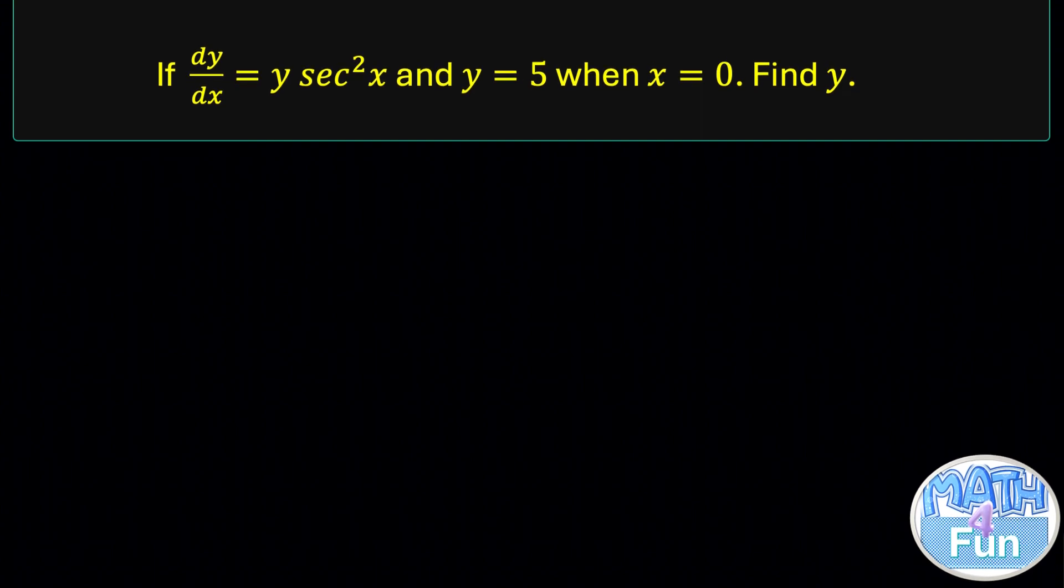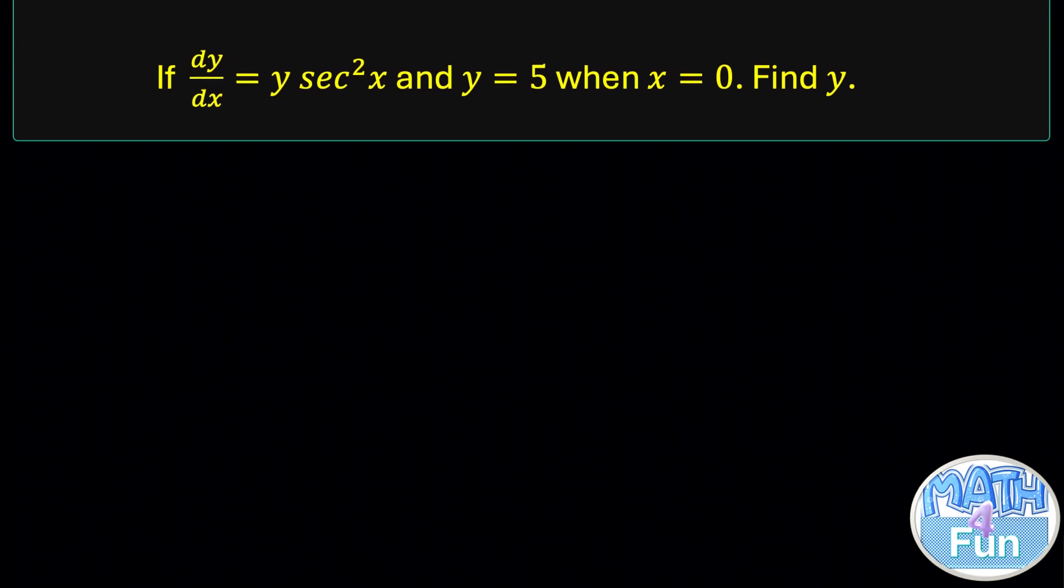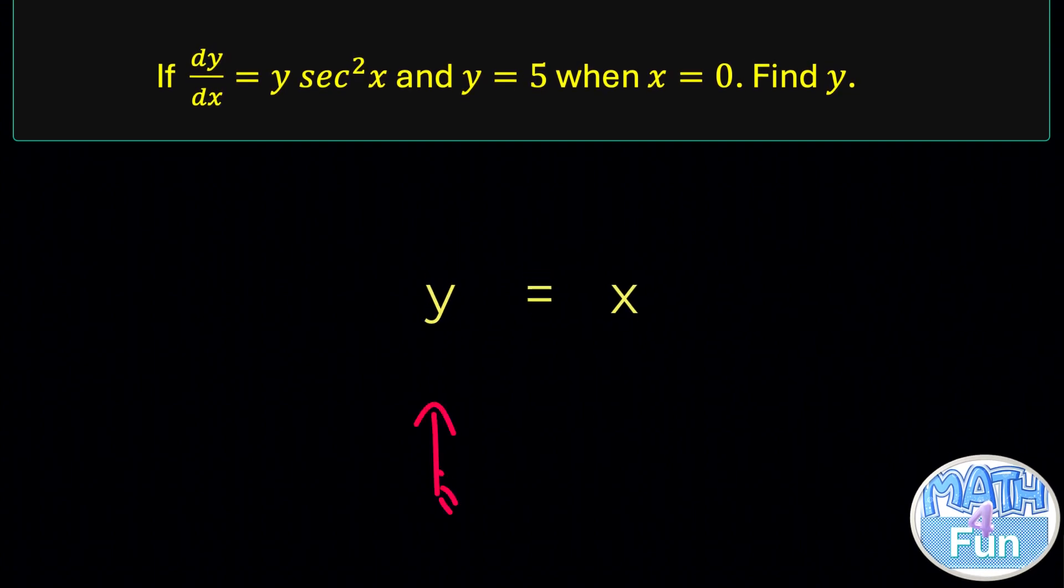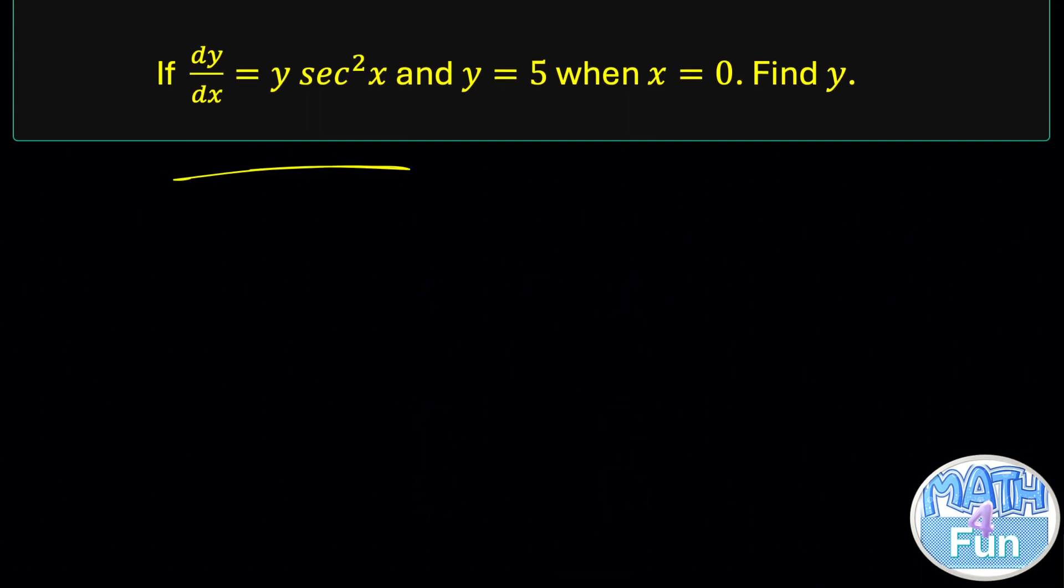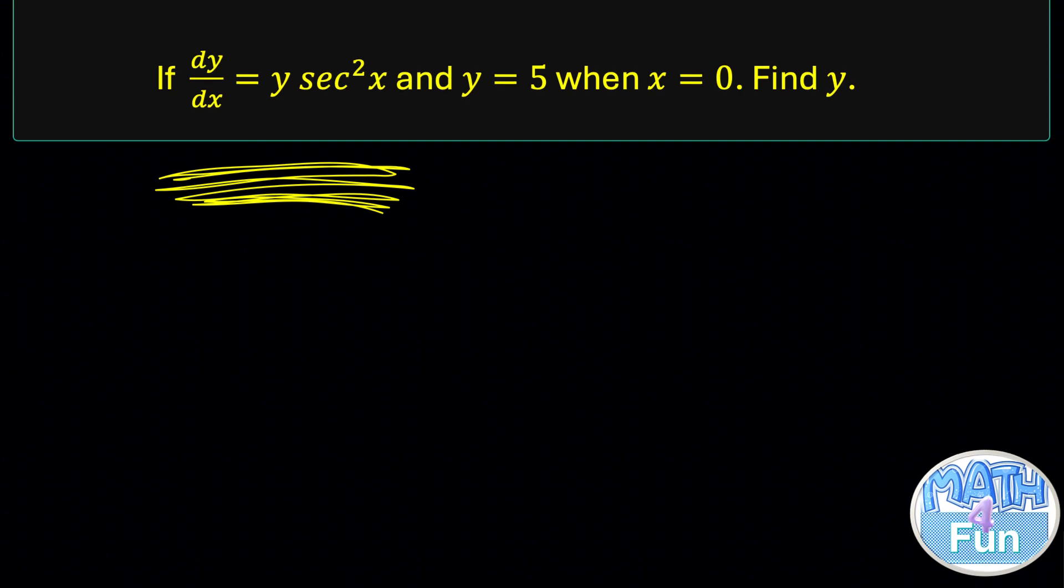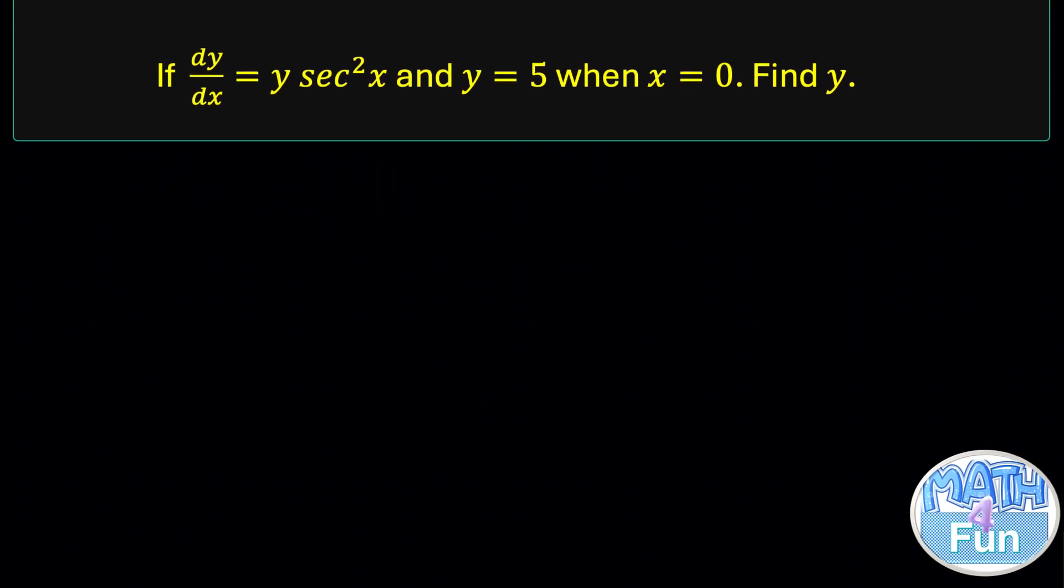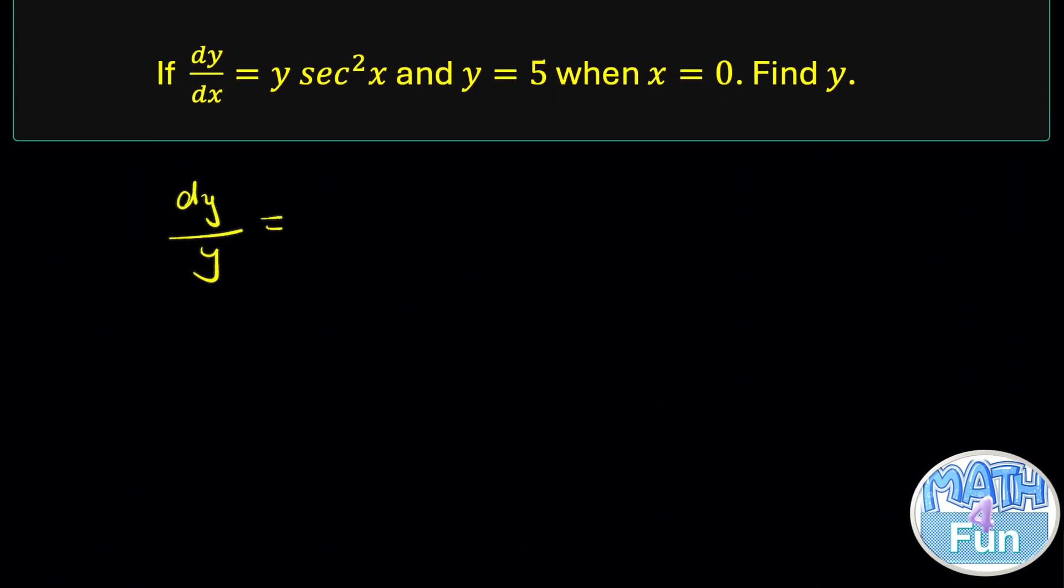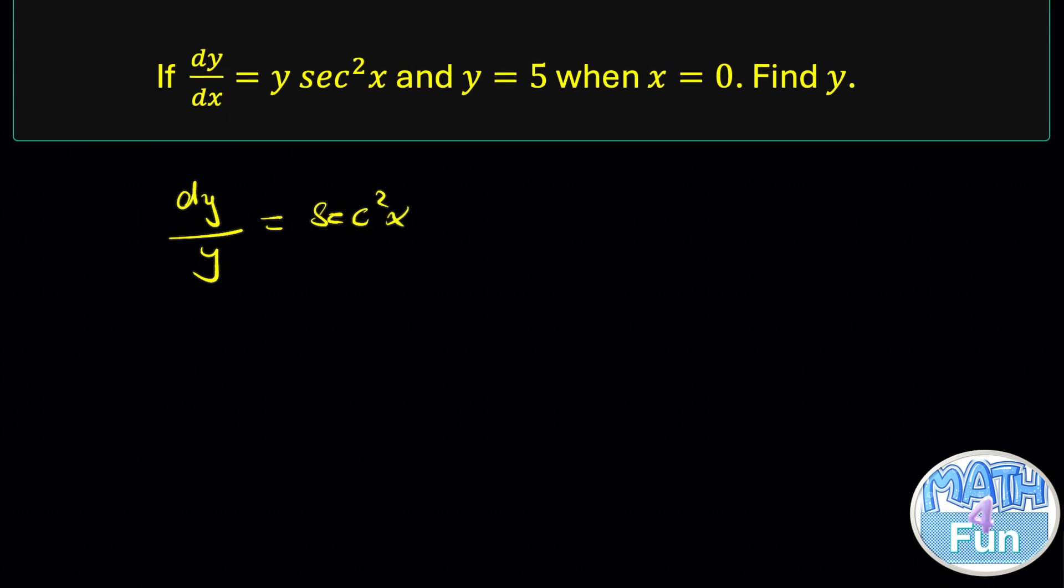As you can see here, the variables are spread around, so we need to do separation of variables. Let's bring y's together on one side and x's to the other side. How do you do that? Look at here: dy/dx = y sec²x. Bring y under dy and take dx to the other side. It becomes dy/y = sec²x dx.